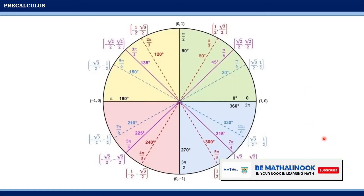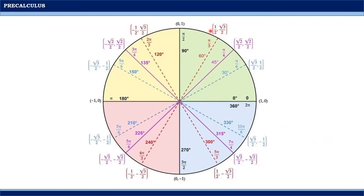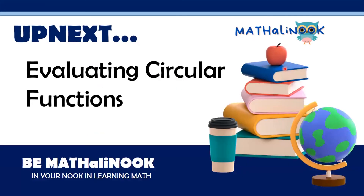This is the summary diagram of all the coordinates of the special right triangles on a unit circle. Notice that the signs of the coordinates vary according to the quadrant location of each angle. On the next video, we will use this diagram to solve other circular functions and discuss evaluating circular functions further.